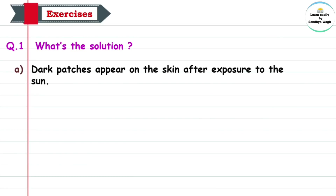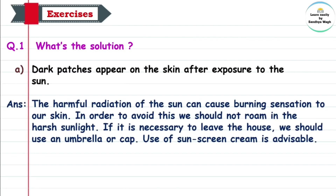Question 1: What's the solution? Dark patches appear on the skin after exposure to the sun. Patches means chatte, and exposure means unhat firlo — that is, going out in the sun causes dark patches on our skin. Answer: The harmful radiation of the sun can cause a burning sensation to our skin.